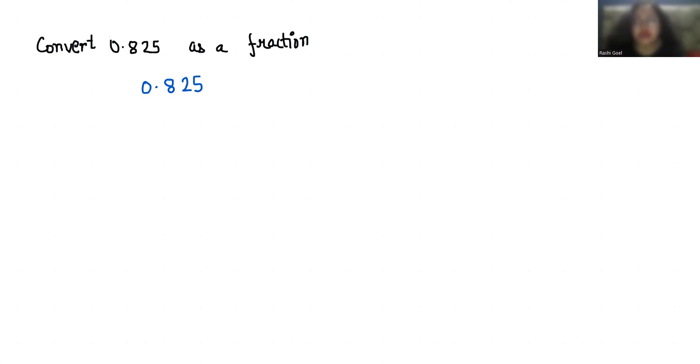Our first step is to convert this decimal in terms of fraction by dividing it by 1. Now multiply with the number of tens in top and bottom as per the number of digits after decimals.